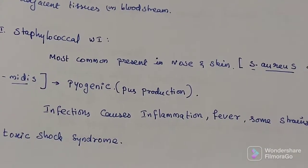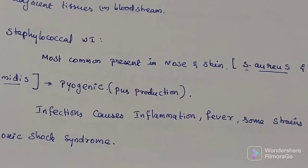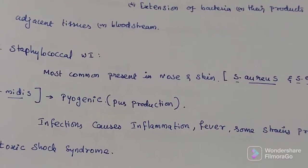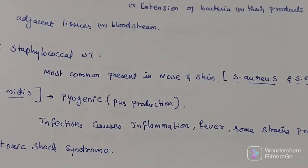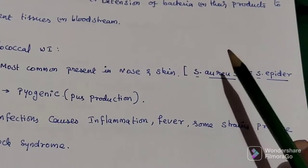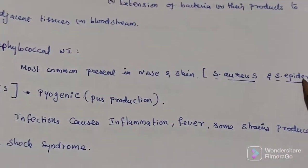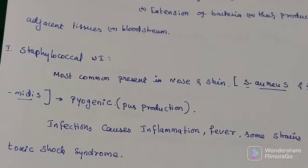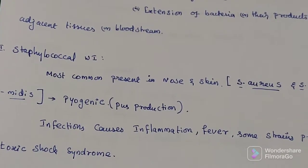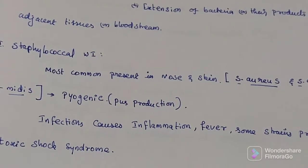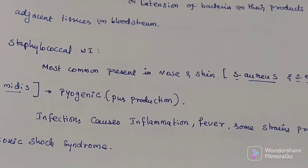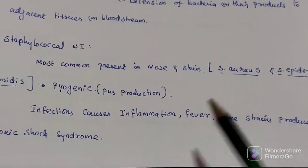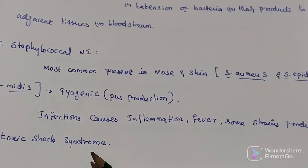The first category is staphylococcal wound infection — this is the most common and least severe. More than 30 strains are recognized. Two are that Staphylococcus aureus and Staphylococcus epidermidis. Both are pyogenic, meaning they produce pus. A significant infection can cause fever. Depending upon the virulence factor, the organism involved can produce toxic shock syndrome, or TSS.